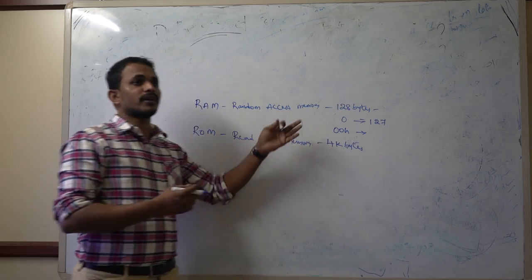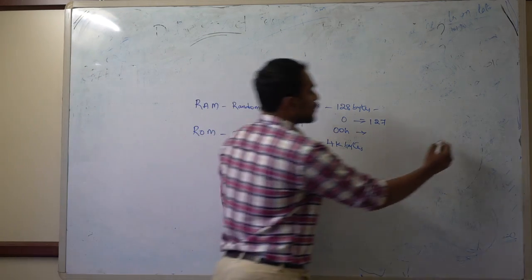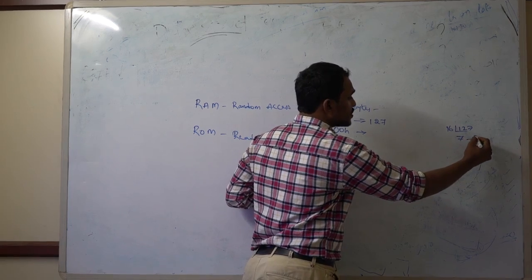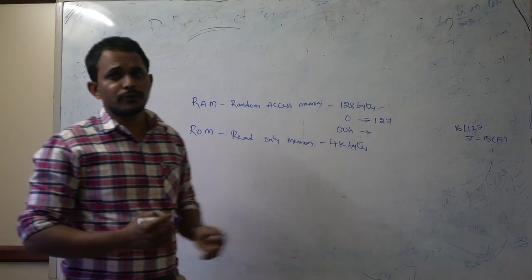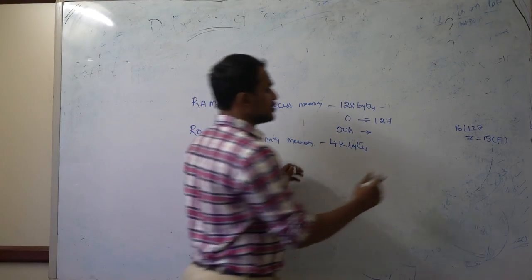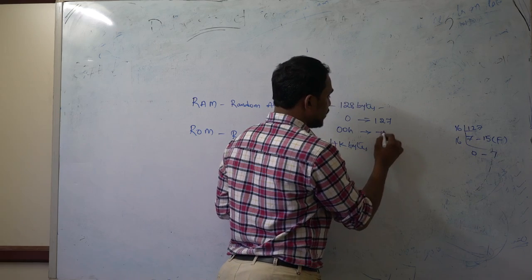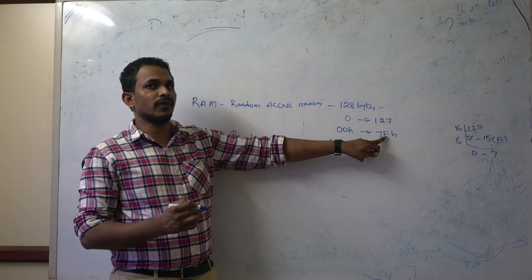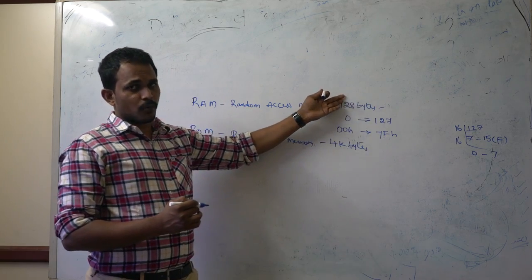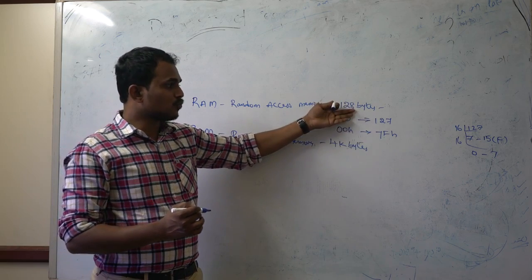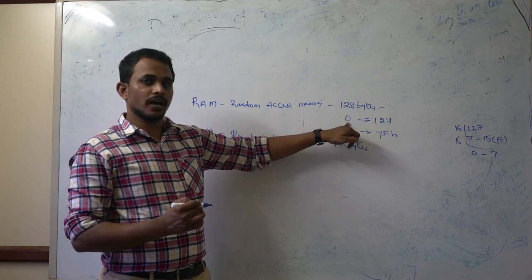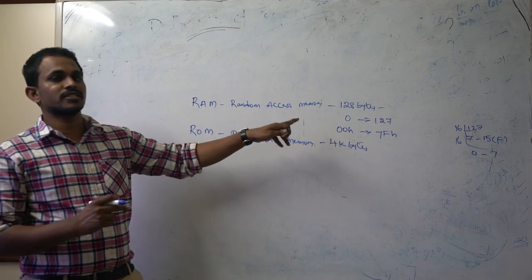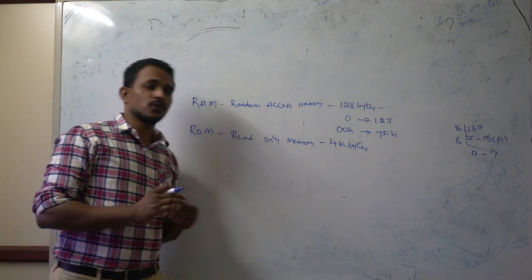To convert 127 to hexadecimal, divide by 16: 127 divided by 16 gives 7 remainder 15, and 15 in hexadecimal is F, so 127 is 7FH. The H suffix denotes a hexadecimal value. So the RAM address range is 00H to 7FH, covering 128 bytes.